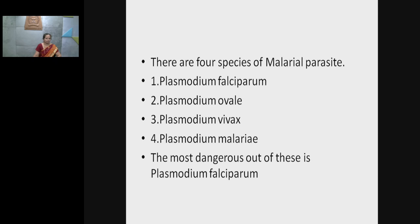There are four species responsible for causing malaria: Plasmodium falciparum, Plasmodium ovale, Plasmodium vivax, and Plasmodium malariae. Among all four, the most dangerous is Plasmodium falciparum, because this species causes infection that goes straight to the brain, which may be fatal for the patient.